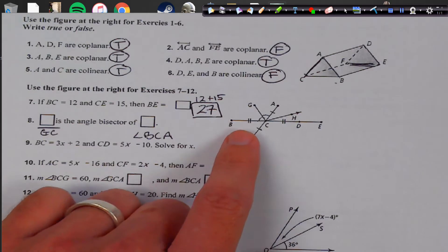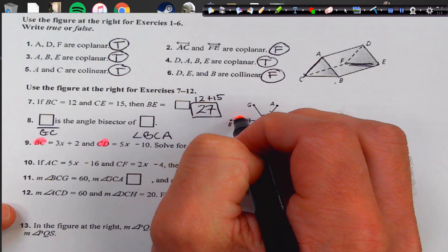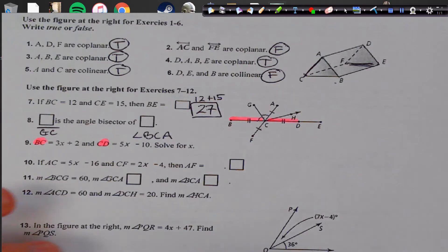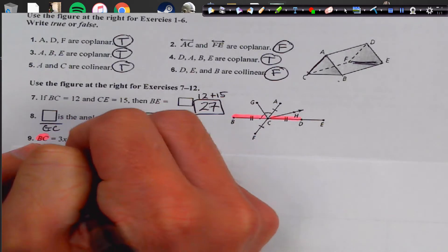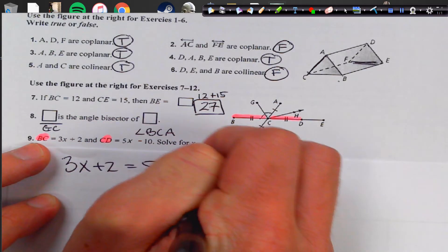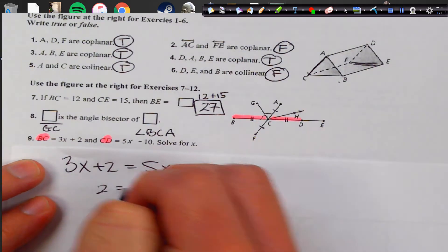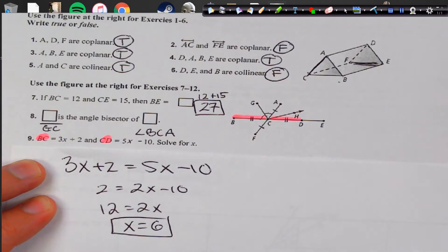Alright, BC and CD. If we look in the picture, we see that BC and CD are congruent. So they have the congruency marks, so we're going to set those two equal to each other. I'm going to use a separate sheet of paper to show my work. So here we go, 3x plus 2 equals 5x minus 10, again they're set equal to each other because of the congruency mark. Subtract, we're going to get 2 equals 2x minus 10, add the ten over, and we get x equals 6, and we're solving for x, so that's our final answer.